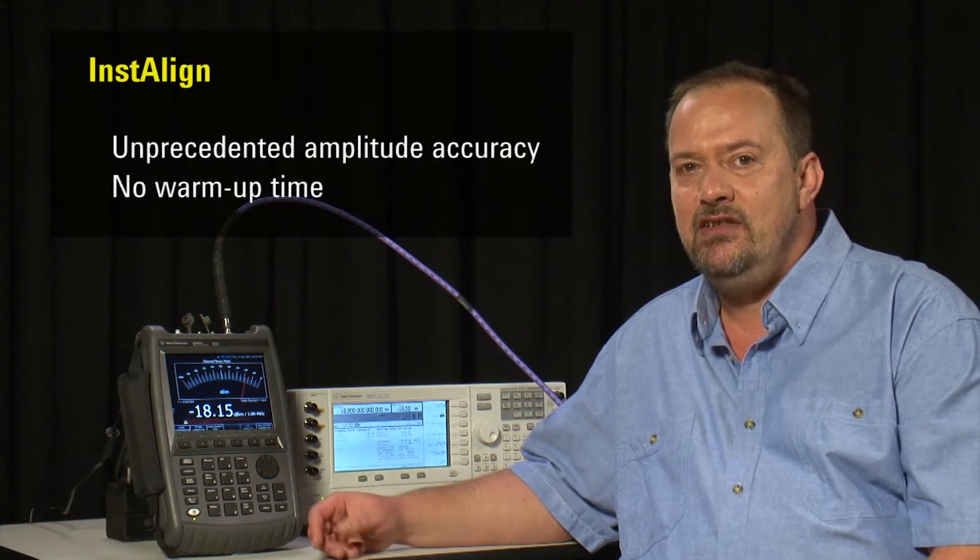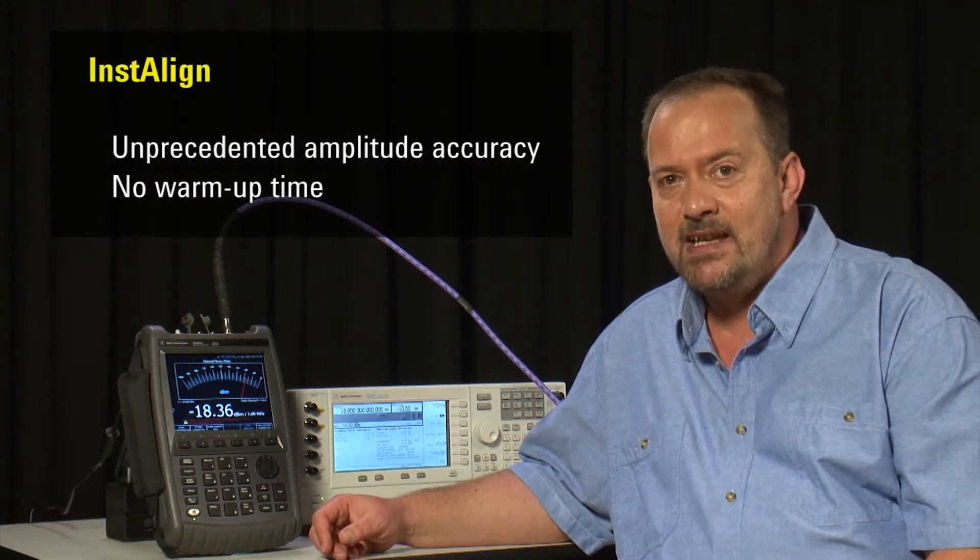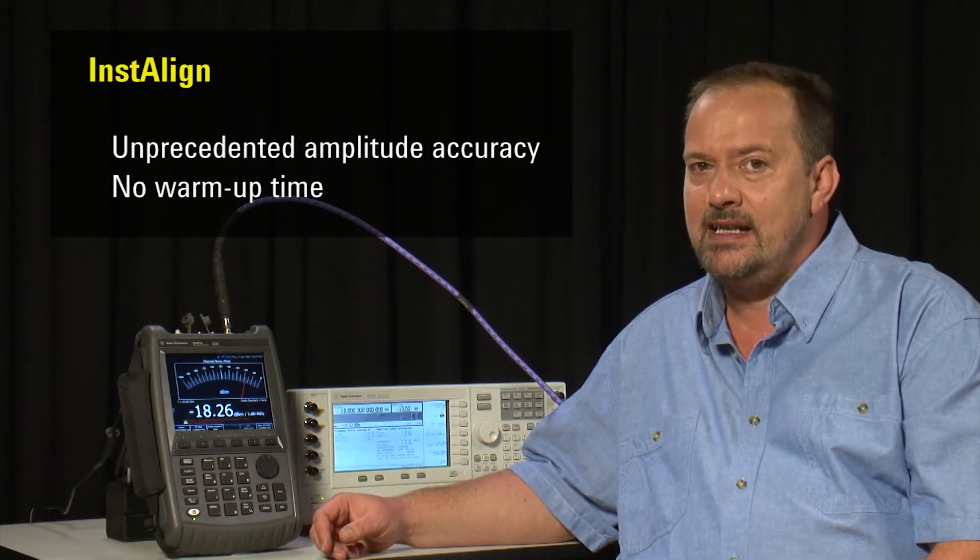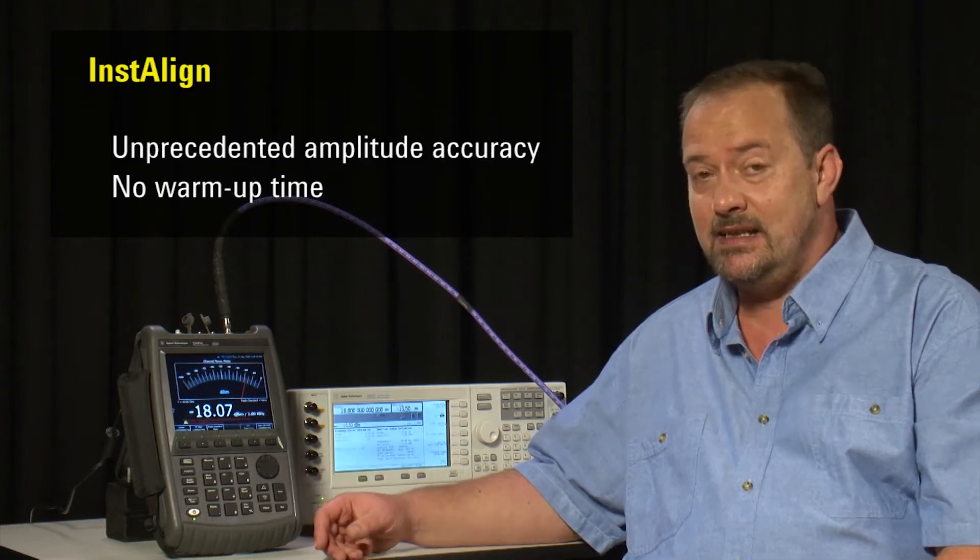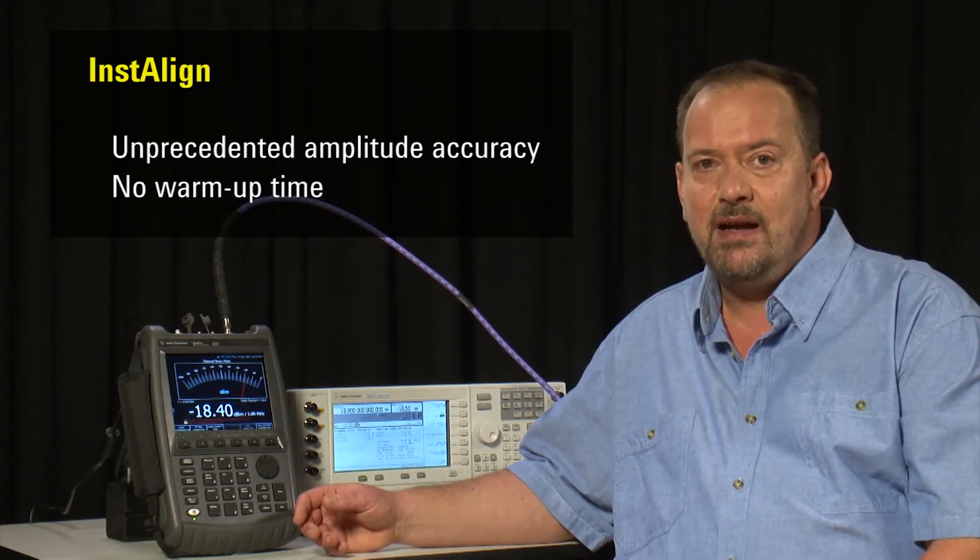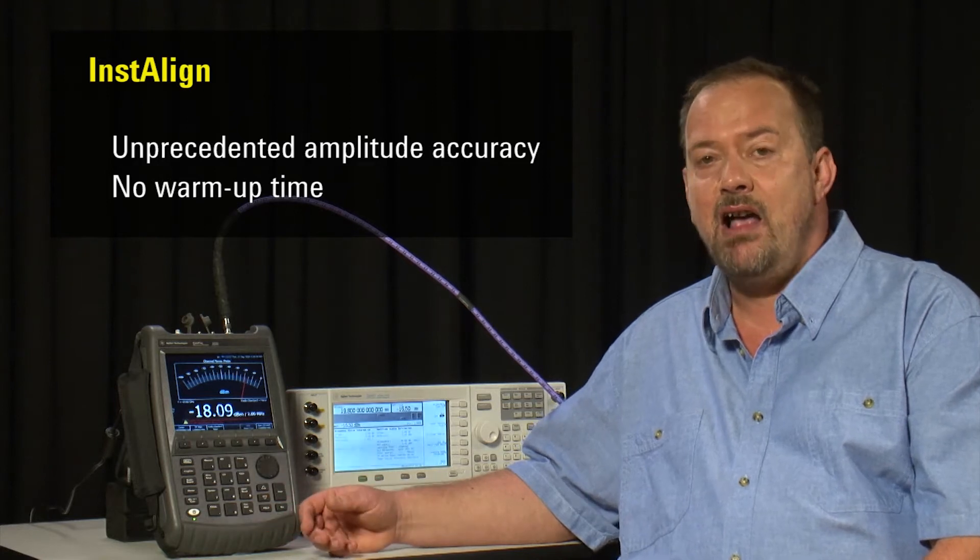This is made possible by Agilent's unique InstaLine technology, so that across the entire operating temperature range of the FieldFox, from minus 10 to plus 55 degrees centigrade, we can measure RF amplitude with a typical accuracy of about half a dB.